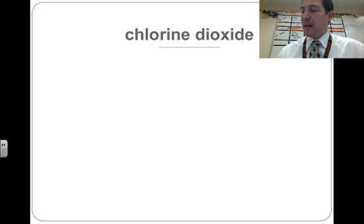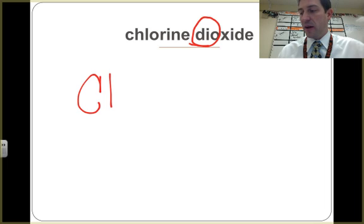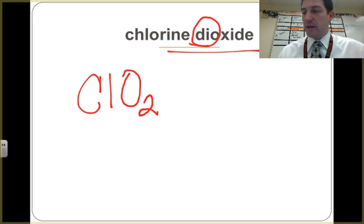Let's try chlorine dioxide. Now, we've got a pretty good indicator right here. The di tells us that this is probably covalently bonded. Indeed, it is. So, we just need to write out what we have. We don't have to look up anything on the periodic table. We've got chlorine, and we've got two oxygens. Chlorine dioxide.